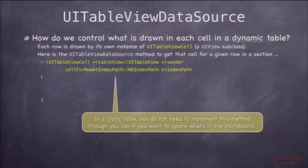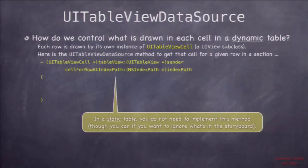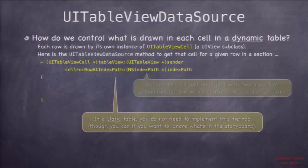We're being asked here to provide a UITableViewCell — which is a UIView — to draw that row in that section. We only need this for dynamic tables, because for a static table we set all this up in the storyboard, so there's no need for the table view to be asking us for this view. This is only for dynamic ones.